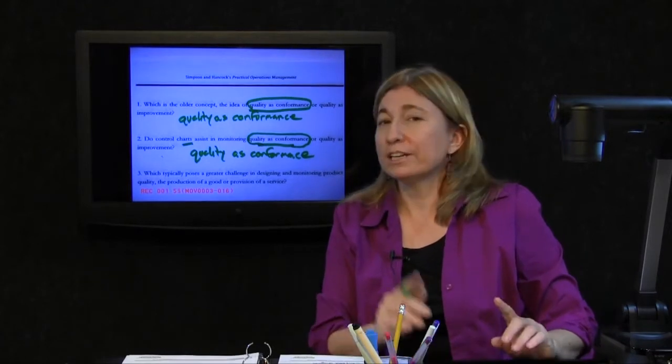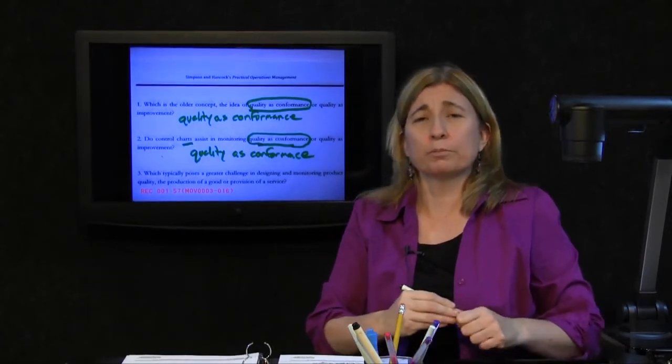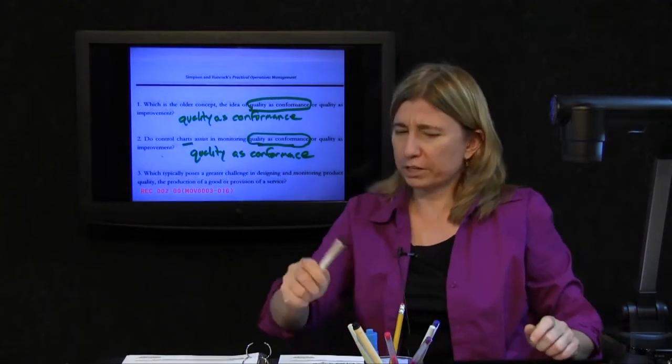Because what control charts do is they set limits on the degree to which you can vary from the specification, which is that they define the idea of what conformance is and whether you're conforming. They don't necessarily track whether your product is improving over time. Next question.